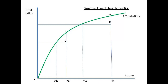The idea of equal absolute sacrifice means the loss of total utility should be the same for all taxpayers. On our map we show two individuals A and B. A has the higher income and the loss of utility needs to be the same for both. Therefore, AD needs to equal BC when A's income is taxed to reduce it from YA to Y-day and B's income is taxed to reduce it from YB to Y-B. We can see clearly that A is going to pay more tax than B.